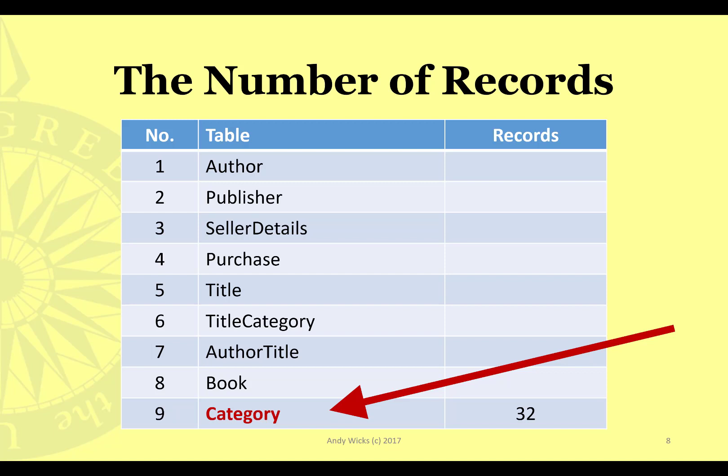The most important item is the book table — we're going to have 2,500 books. So the shop has got 2,500 books in it. That may or may not be true; you may think it should be double that, somebody else thinks it should be a few less. I'm going with 2,500.